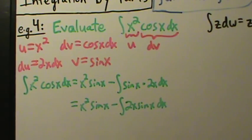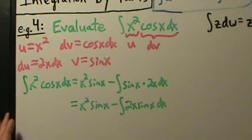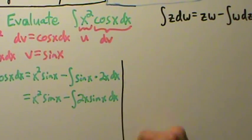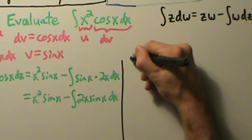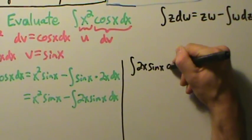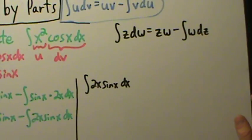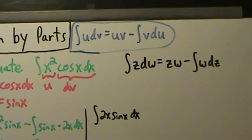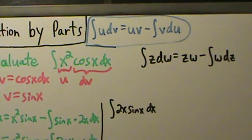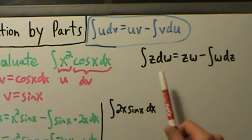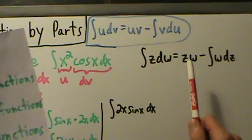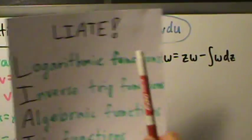Let's come off to the side and evaluate that integral separately. We need to evaluate the integral of 2x sine of x dx using integration by parts again, now with z's and w's. Everything is exactly the same as before — just different variable names. We still use the LIATE rule, just choosing z instead of u.